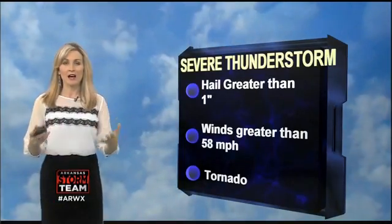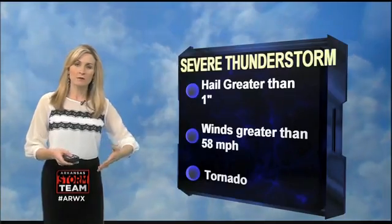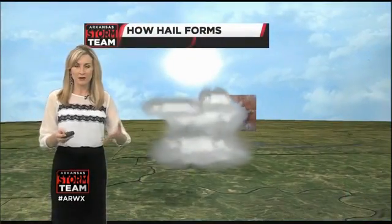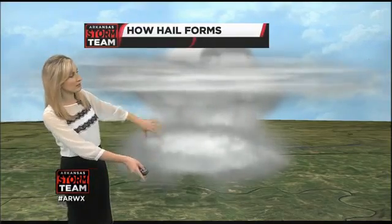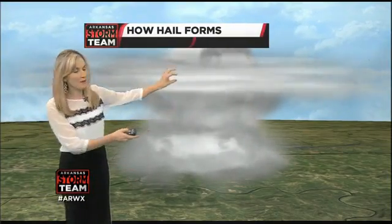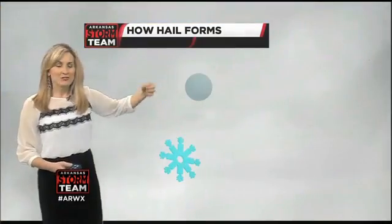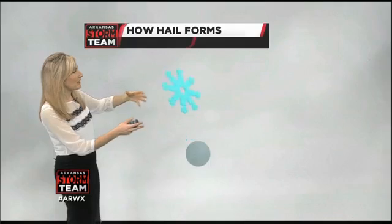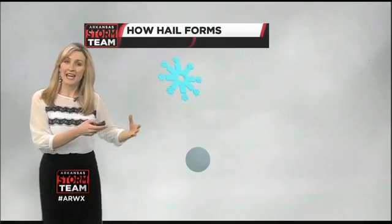First, let's get into how hail forms. Hail forms from the updraft of a thunderstorm. Every thunderstorm has an updraft and a downdraft, and we get a strong updraft inside of that cloud. Up at the top of the cloud, snowflakes and supercooled water droplets coexist. These collide with each other and form an ice pellet, which soon becomes a hailstone.